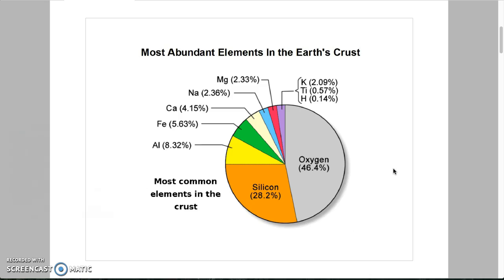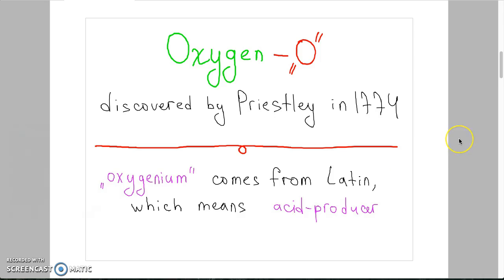That's why today we will talk about oxygen. Symbol of oxygen is O. Oxygen was discovered by Priestley in 1774. Oxygenium, or the name of oxygen, which means acid producer, comes from a Latin language.